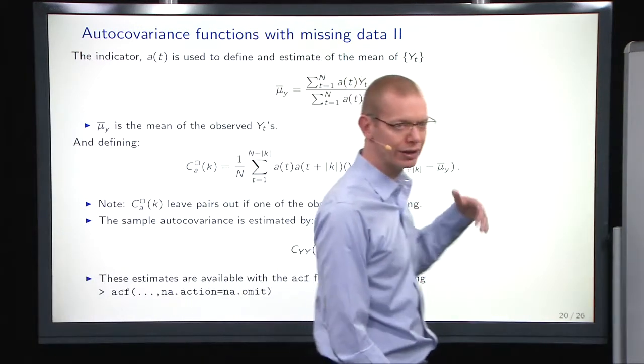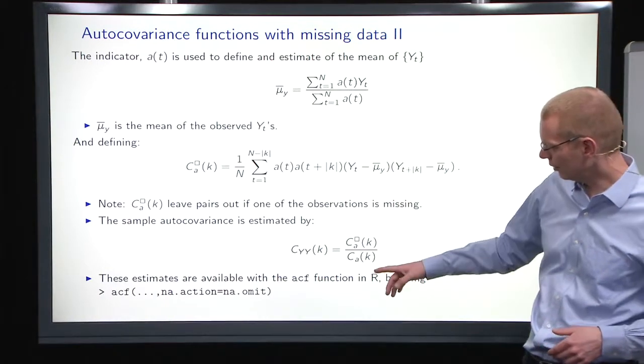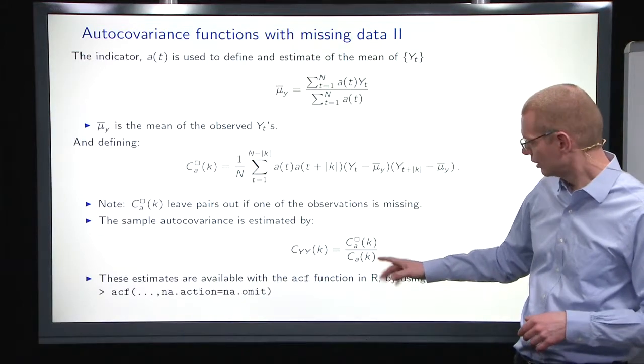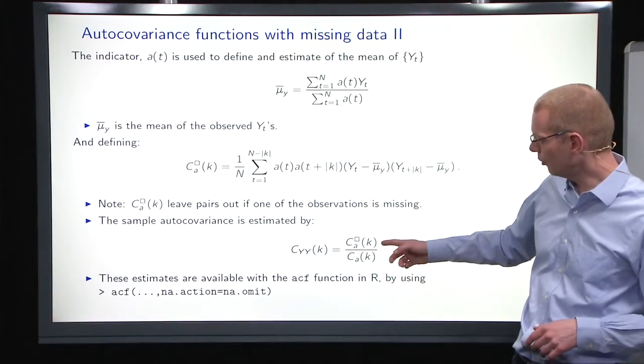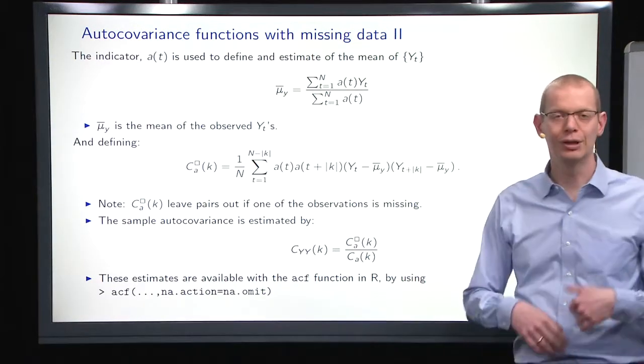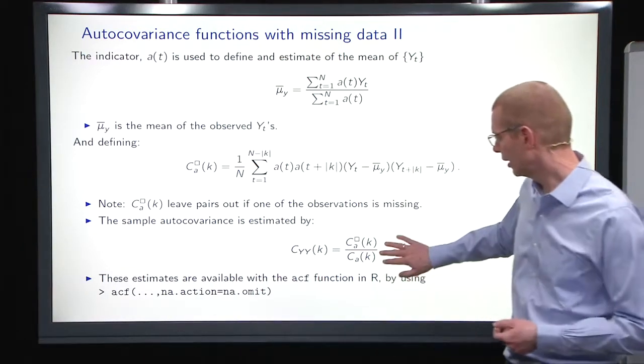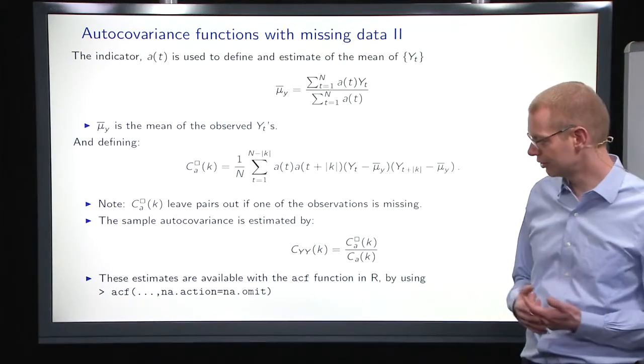So basically, this is just summing over all the possible pairs. And now to get a sample autocovariance, an estimate of that, you just have to normalize with this here, normalize that with the proportion of pairs, possible pairs that are actually observed. Then we get an estimator that is consistent.